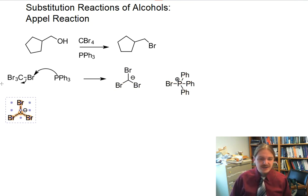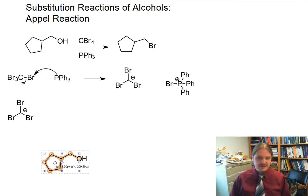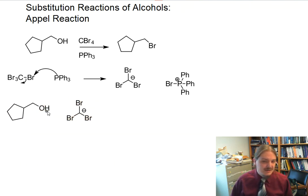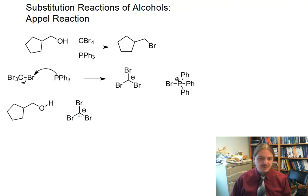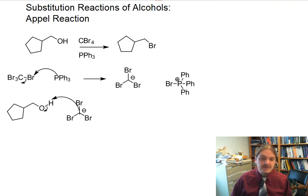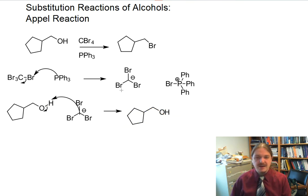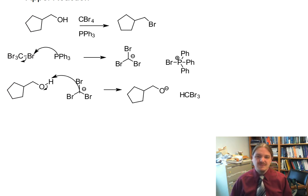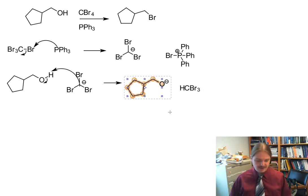The next step is that the tribromomethyl reagent acts as a base and deprotonates the alcohol. The pKa of the alcohol is going to be around 16, and the pKa of the tribromomethyl anion is going to be much higher, in the 30s perhaps. So we have a proton transfer, and now we have an alkoxide anion. The other product is CBr3, or bromoform.